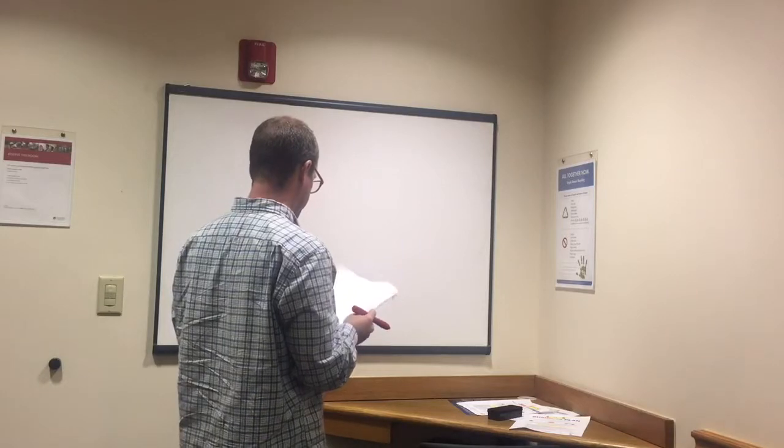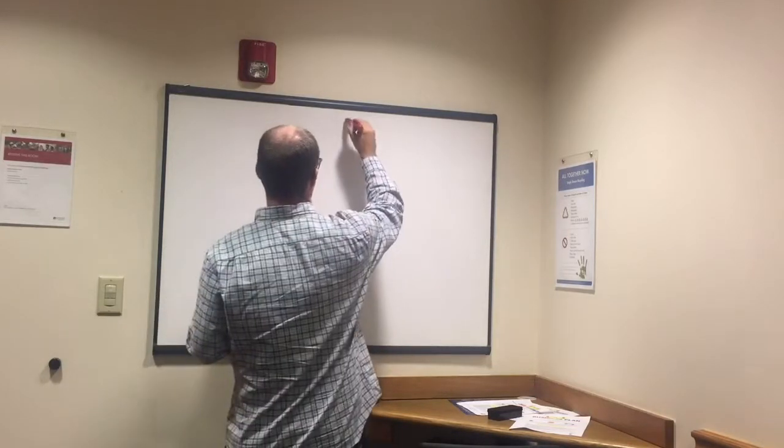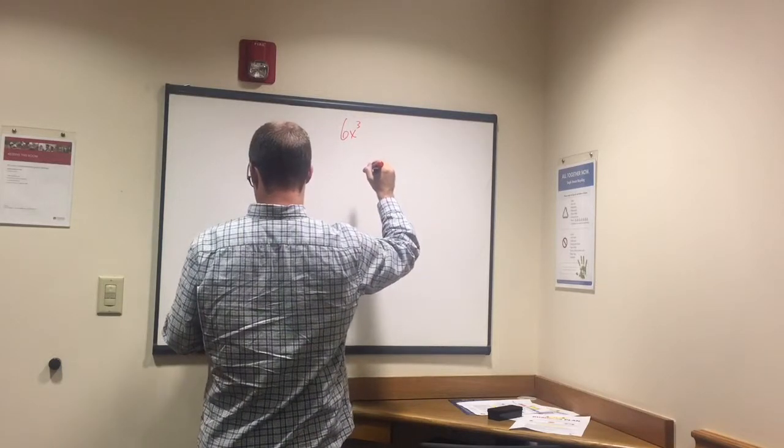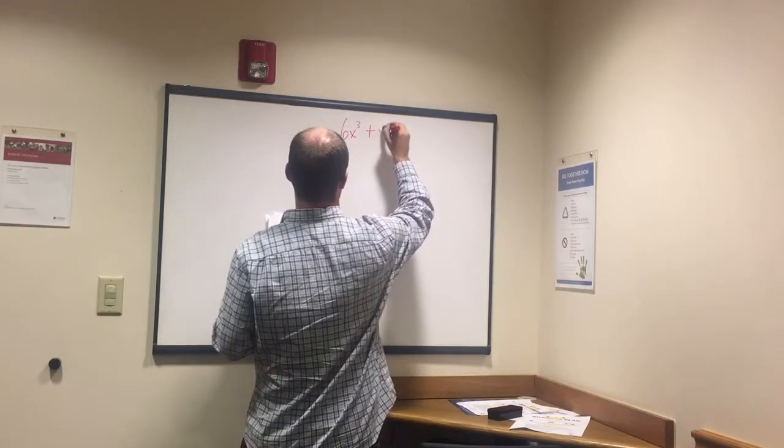Now we get to stuff where we have to simplify. This is a little bit harder. So we got 6x to the third plus x squared